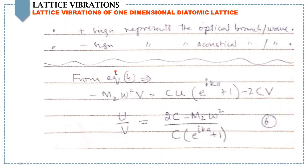Let's focus again on equation number 4: minus M2·ω²·V equals this expression. Writing this equation in terms of u/v, we get: u/v equals (2C minus M2·ω²) divided by (C·e^(2iKA) + 1). Let's call this equation number 6. Using this expression we are going to get some very nice results, which I'll explain one by one.